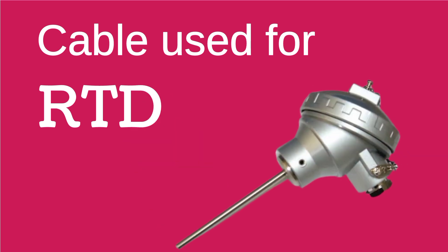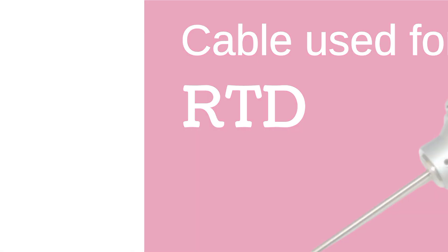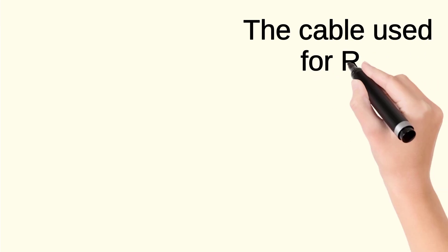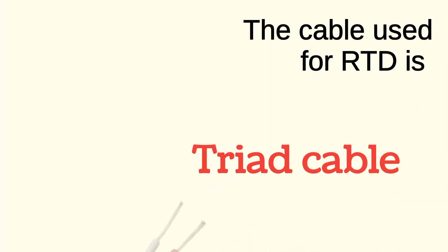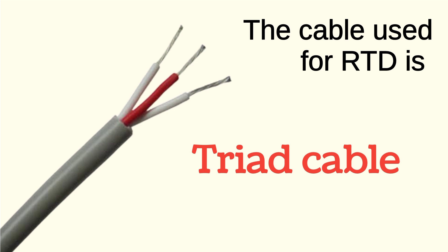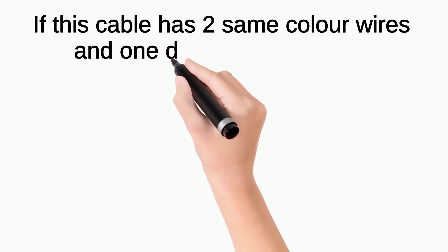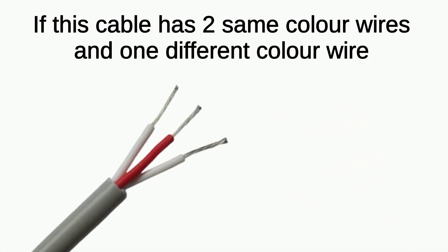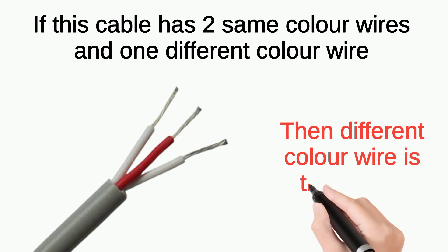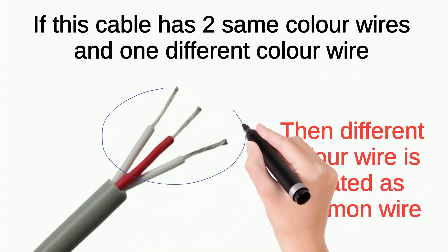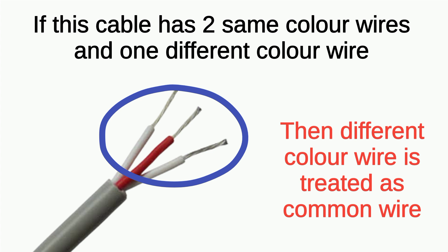First, we will see the cable used for RTD. The cable used for RTD is triad cable, as shown in the image. If the triad cable has two same-color wires and one different-color wire, then the different-color wire is taken as the common wire. For example, the same-color wires are white and the different-color wire is red, so the red wire will be taken as the common wire.